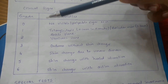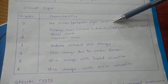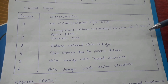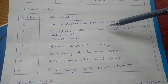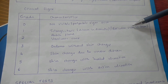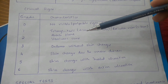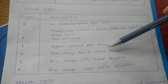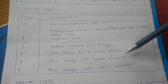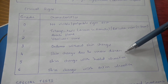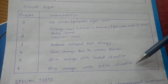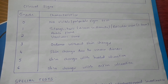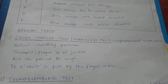Under clinical signs: Grade 0 means no visible or palpable signs. Grade 1 is telangiectasis or reticular veins — telangiectasis means the diameter of the vein is less than 1 mm, reticular veins have a diameter of 1 to 3 mm; ankle flare may also be seen. Grade 2 is varicose veins. Grade 3 is edema without skin changes. Grade 4 is skin changes due to venous disease. Grade 5 is skin changes with healed ulceration. Grade 6 is skin changes with active ulceration.